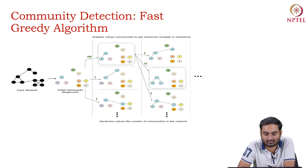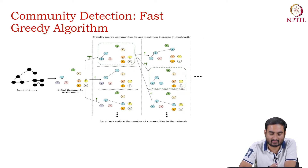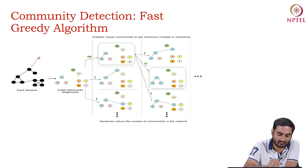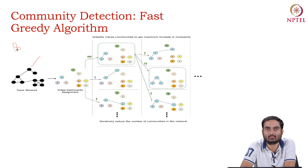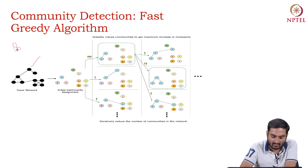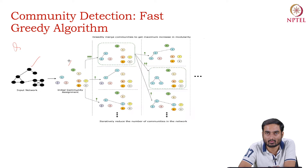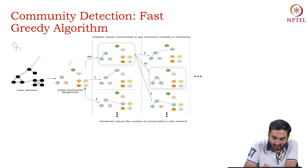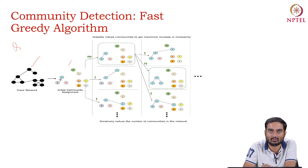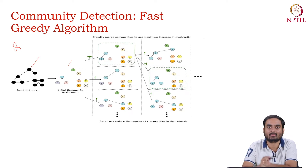The fast greedy algorithm is proposed by Newman and his team. The idea is very simple: you have a network and our quality metric is Q, and we try to maximize Q. We start by assigning all nodes to individual communities. The colors indicate different communities, and each node belongs to a separate community. So there are 9 nodes and 9 different communities.